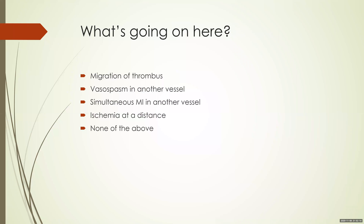Is it due to migration of thrombus? Is it due to vasospasm in another vessel? Is it due to a simultaneous MI occurring in another vessel? Is it due to ischemia at a distance? Or none of the above?